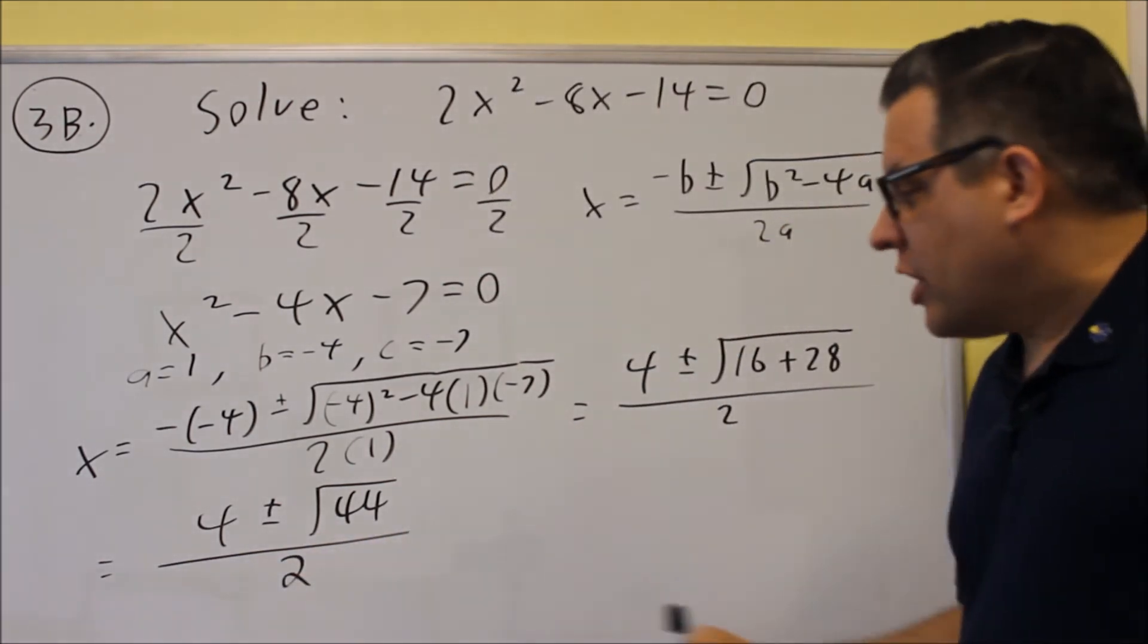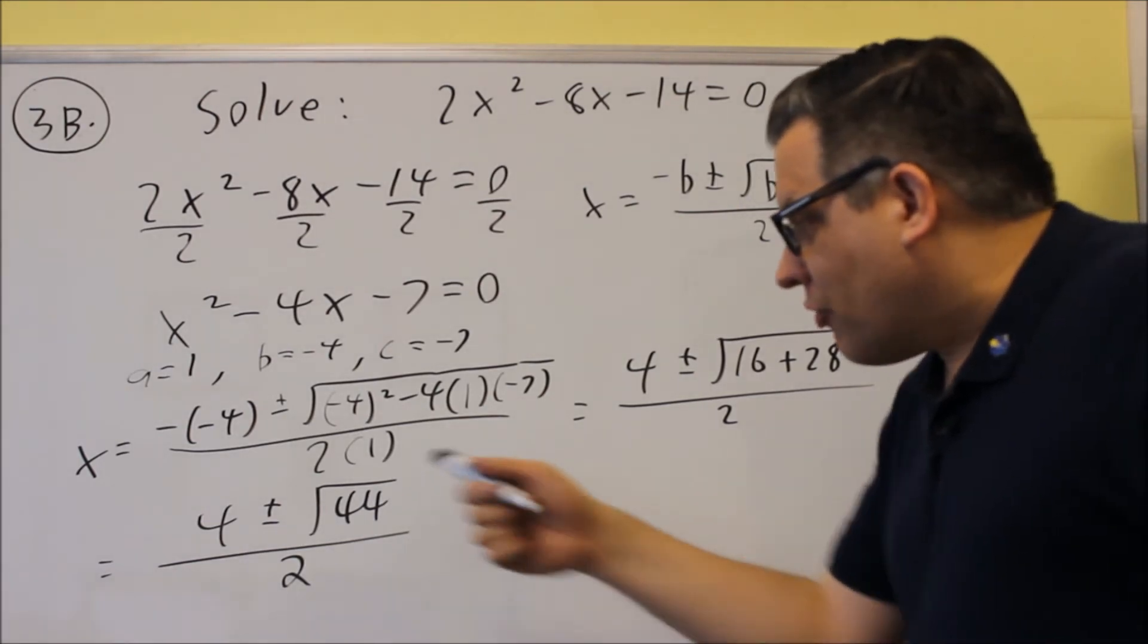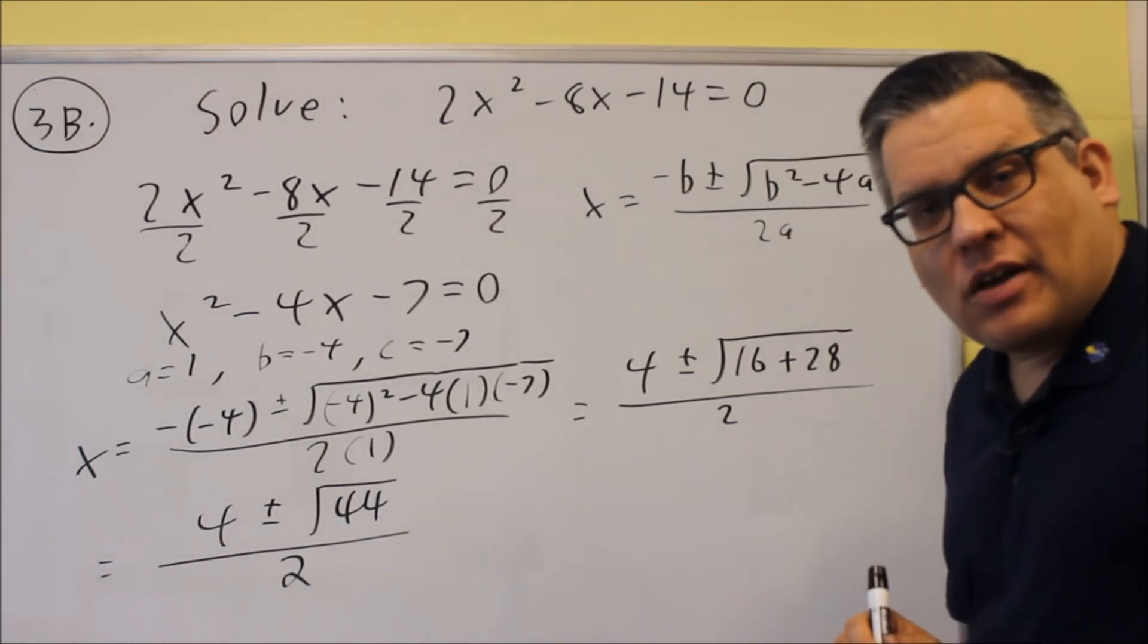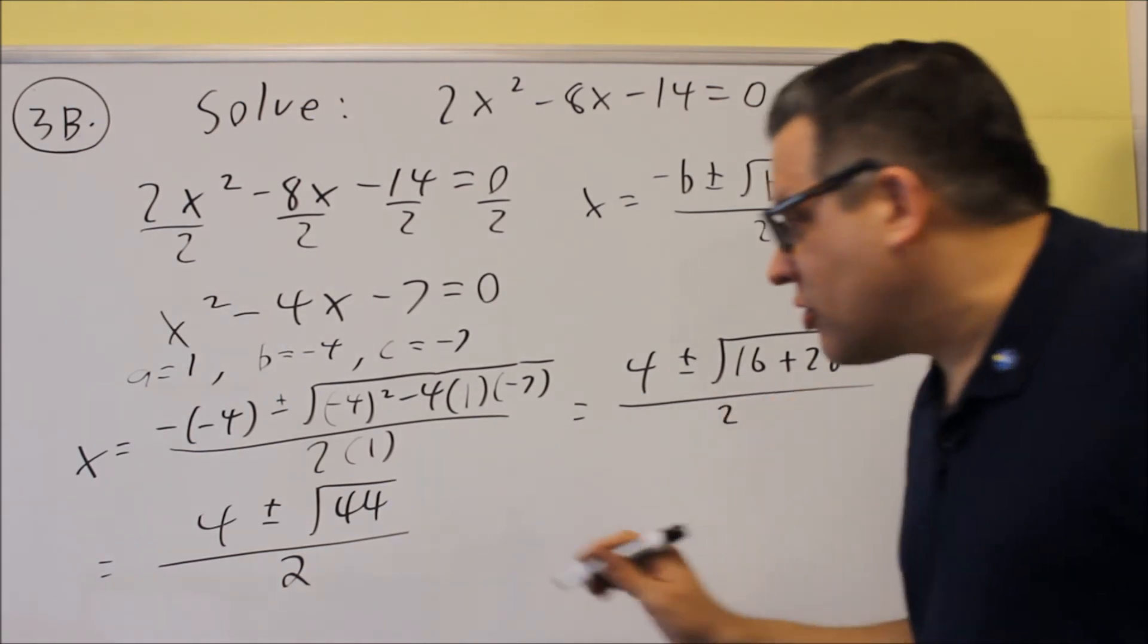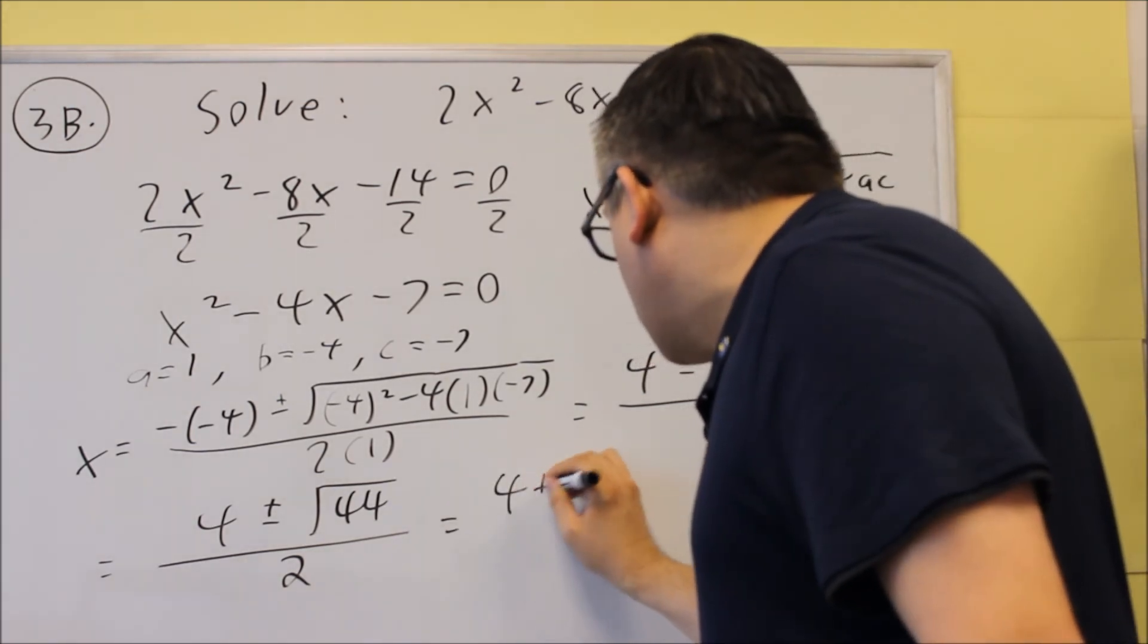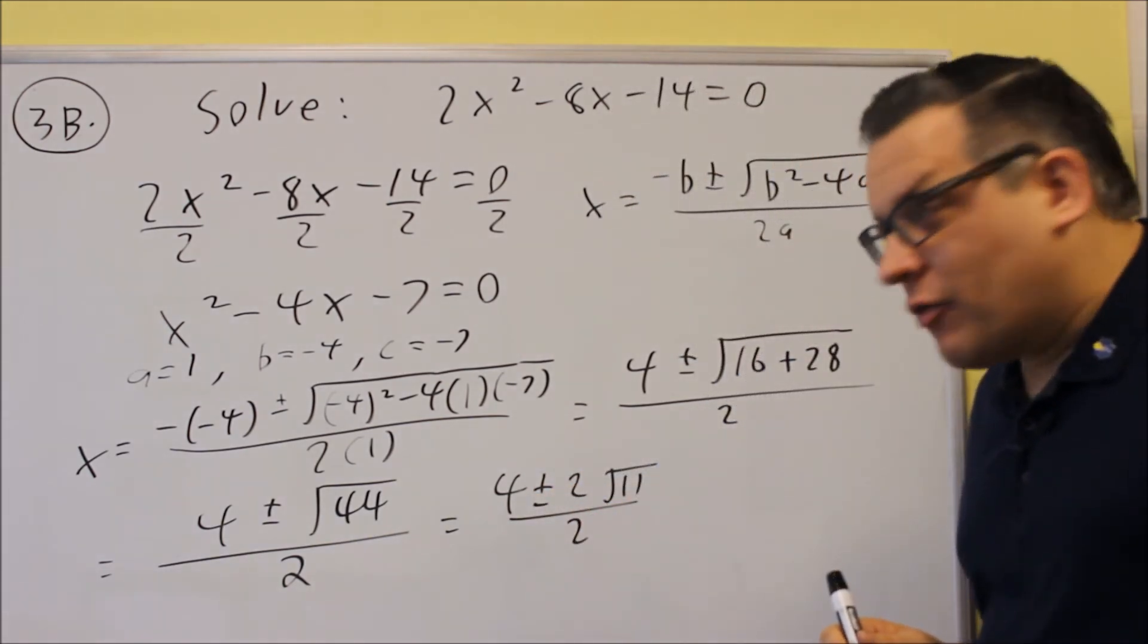If it's a square root that you can break down further, you do want to go ahead and do that step. So 44, you can write that as 4 times 11, and if you do square root of 4, a 2 is going to come outside. So that can be broken down to 2 square root of 11.